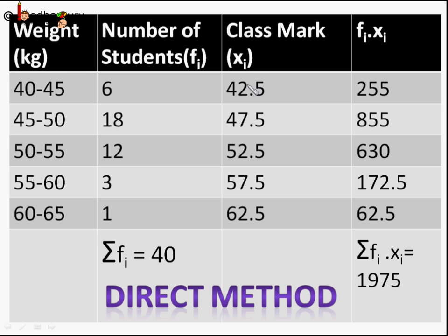This method is called direct method. To revise, first we find the class mark by obtaining center point for each class, like 42.5 is center of 40 to 45 class.